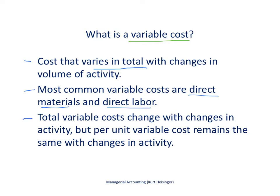To summarize: total variable costs will change with changes in activity, but the per unit variable cost remains the same. The term 'variable' relates to total costs, not per unit costs. Similarly, the term 'fixed' relates to what happens with total costs with changes in activity, not what happens to the per unit cost.